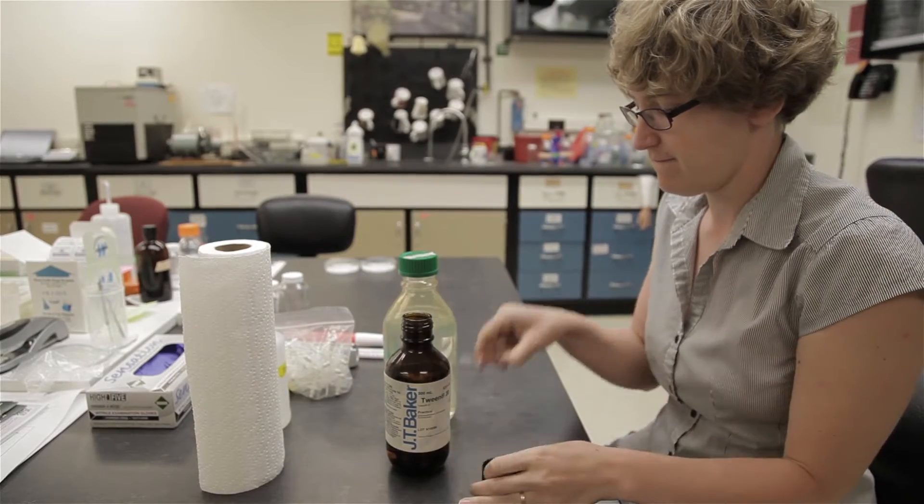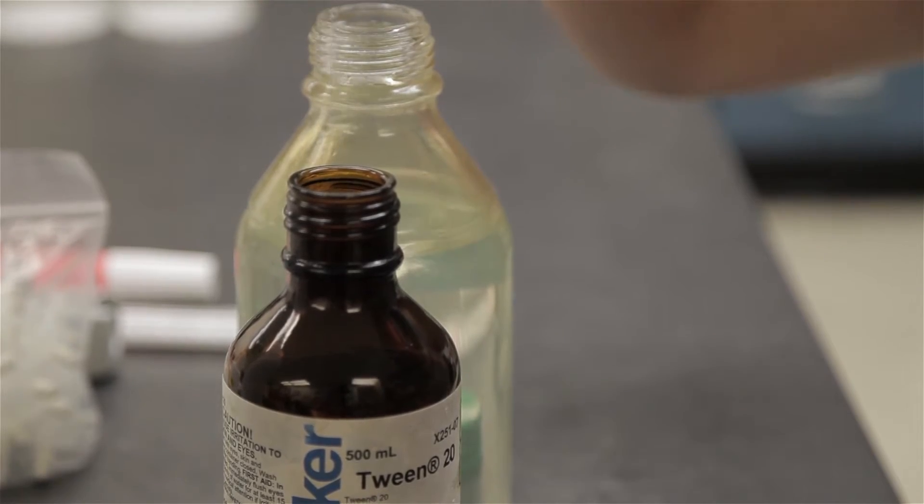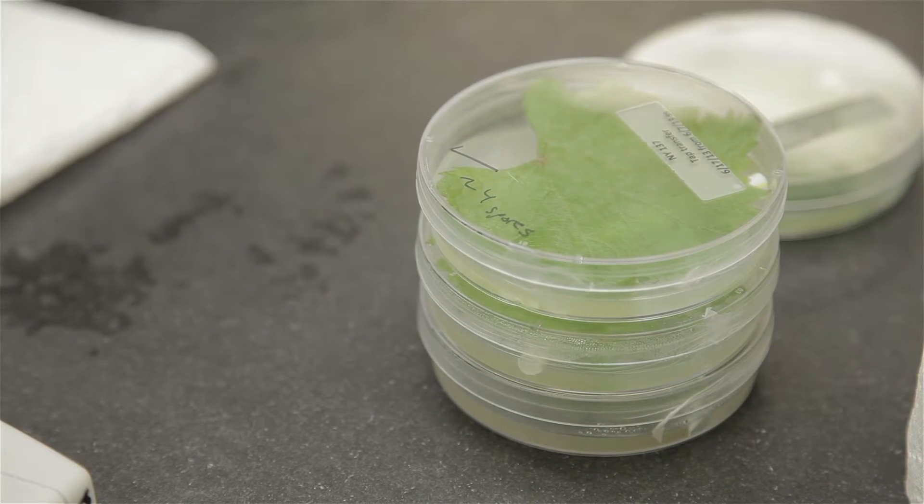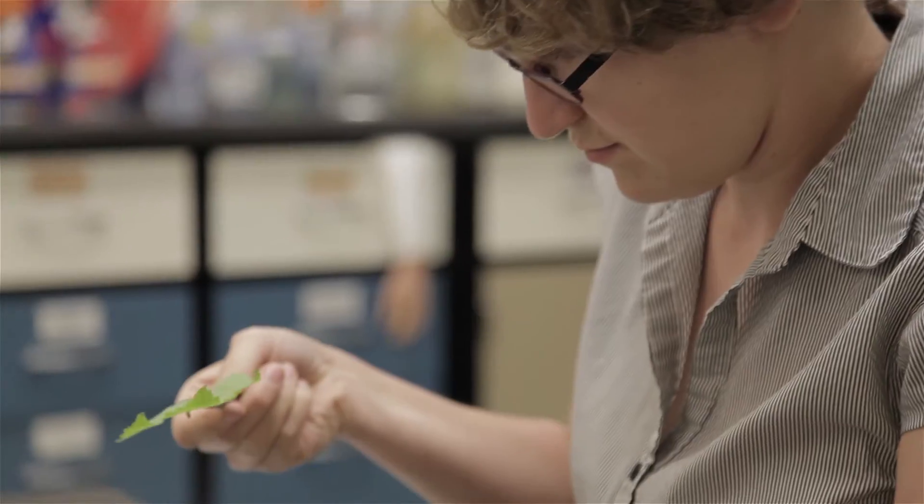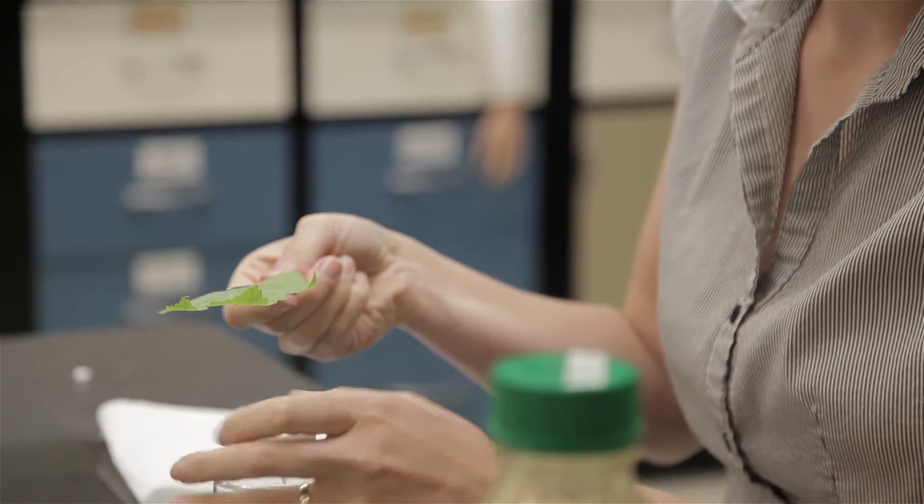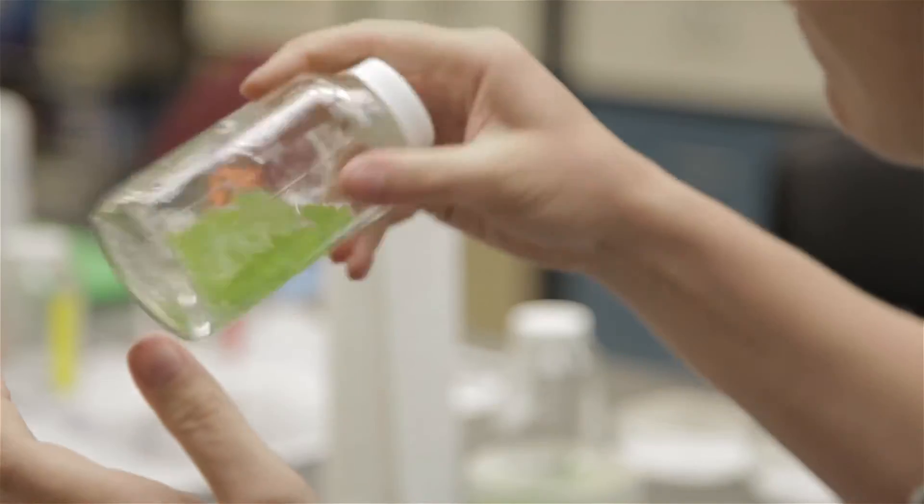Our job is to assess grape breeding populations that are part of the VitisGen project for resistance to powdery mildew. Today we're inoculating a population belonging to Bruce Reisch, the grape breeder here at Cornell. Before we inoculate, we need to grow a lot of powdery mildew. In the field, powdery mildew is variable, so we want to have no variability. We want to have the exact same amount of powdery mildew on each individual. We take a leaf that we made that is covered in powdery mildew and wash the spores off the leaf into water.